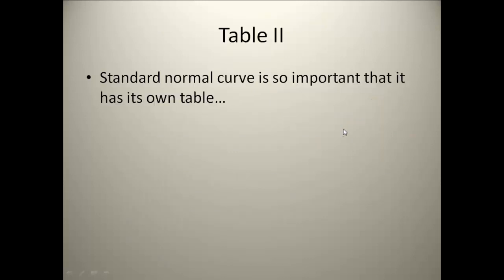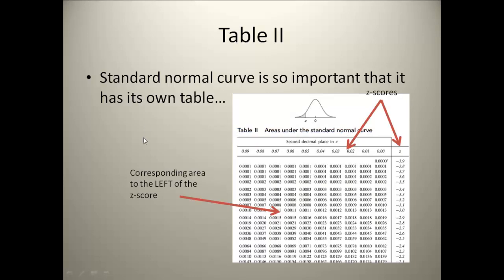When we produce z-scores, they are used so often that a table has been created — for us, it is Table 2 in your appendix. Table 2 is a table of the areas under the standard normal curve. All of the values on the inside of the table are areas to the left of a particular z-score. The z-scores are along the edges of the table.